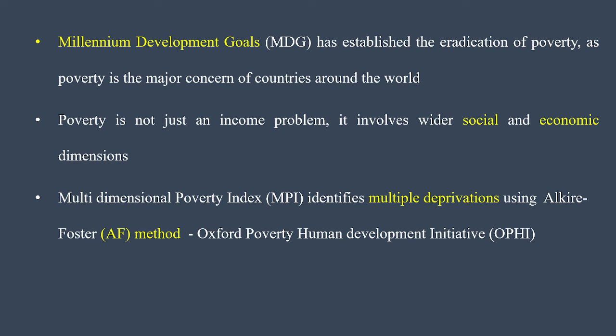Several measures, policies, and worldwide discussions have been taking place. The Sustainable Development Goals and before them the Millennium Development Goals — started around 2005 — had the main objective of eradicating poverty, which is a major concern of countries around the world. Poverty is not just an income problem; simply providing money will not relieve a person from poverty, because it involves wider social and economic dimensions.